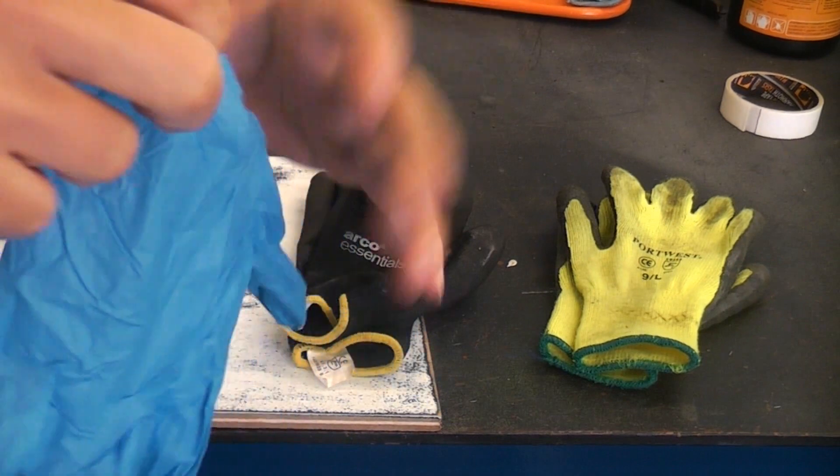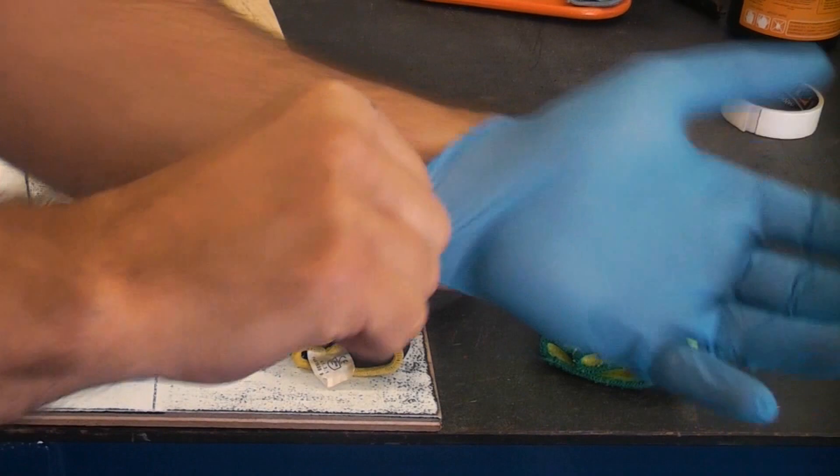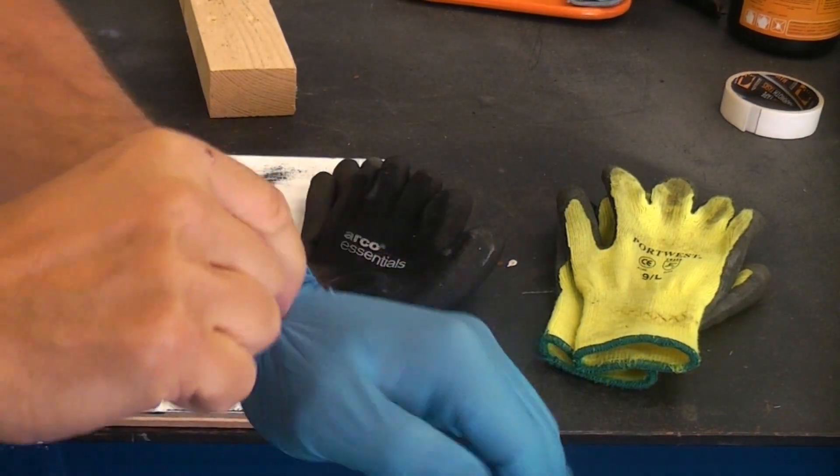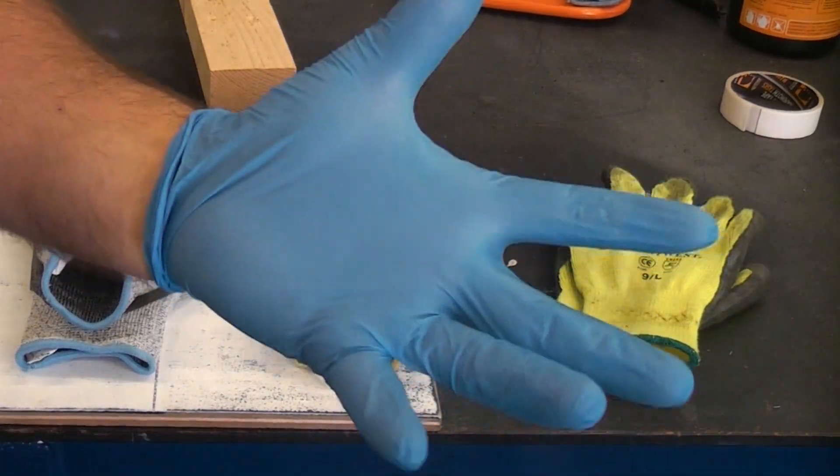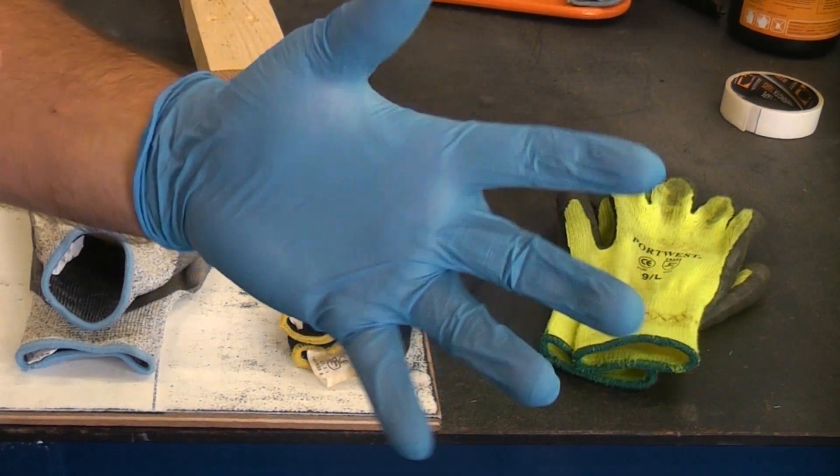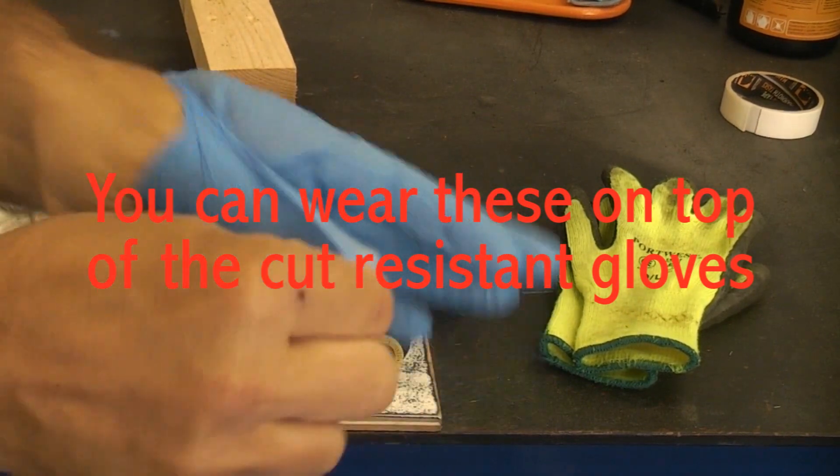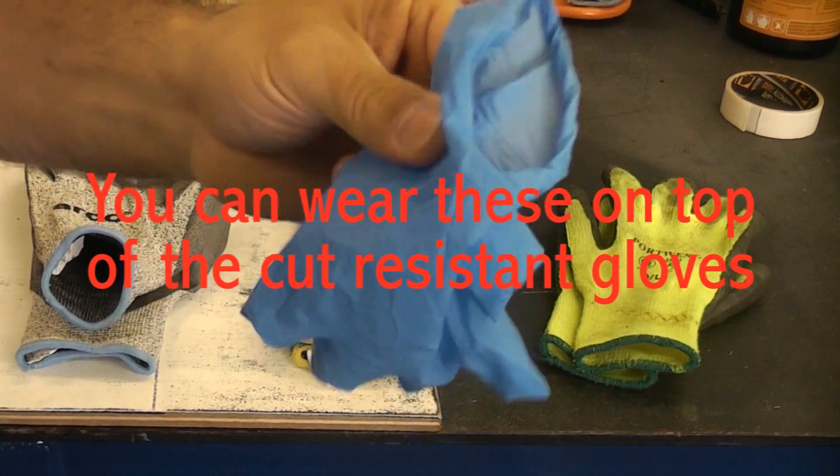And occasionally you will see me wearing gloves like this, which are simply to keep your hands clean. These will stop chemicals, paint, thinners from actually getting onto your skin. These are easily torn—they rip very easily, so you tend to just wear these for quick jobs where you can soon pull them off when they are dirty and dispose of them in the bin.